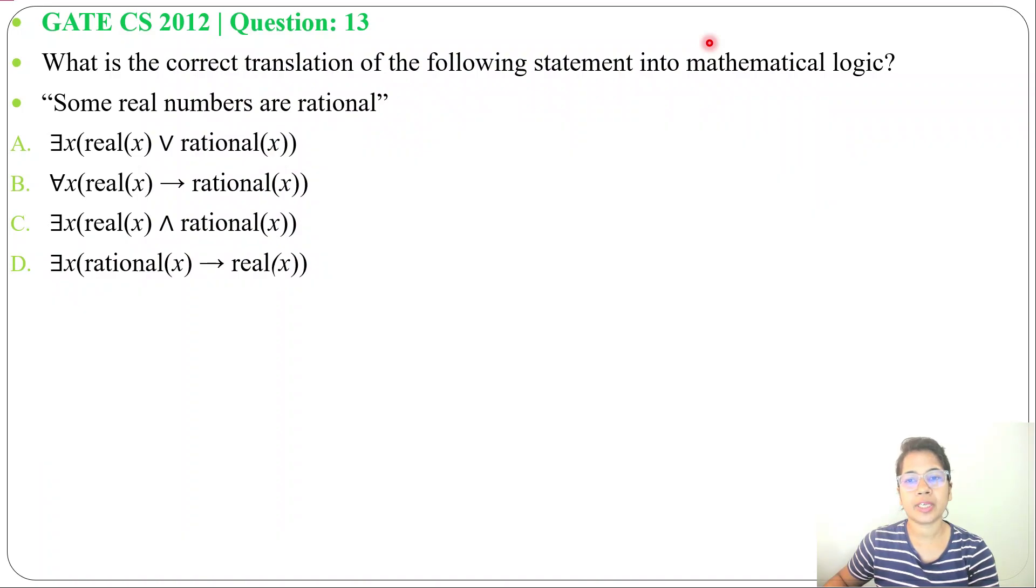Let's solve one previous question of mathematical logic. This question was asked in GATE CS 2012, question number 13: what is the correct translation of the following statement into mathematical logic? Some real numbers are rational, and four options are given.